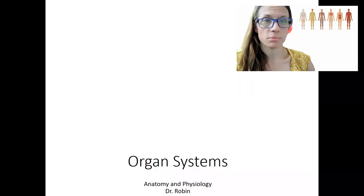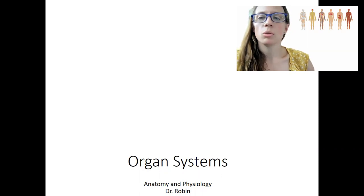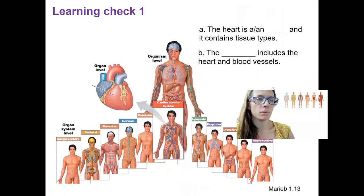We're going to talk about organ systems now, and I want to actually start with a learning check. We just talked about organization and levels of organization. So with that in mind, would you tell me the answer to these two questions? The heart is what? It contains multiple tissue types, and the blank includes the heart and blood vessels.